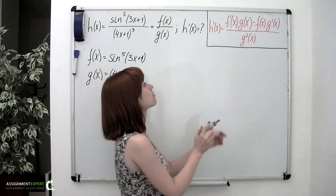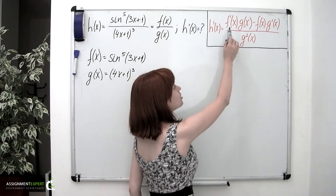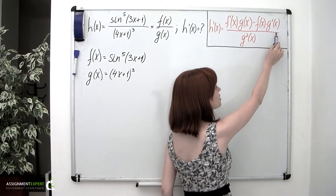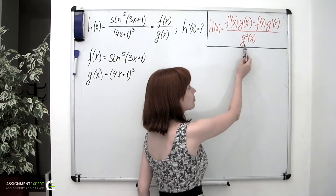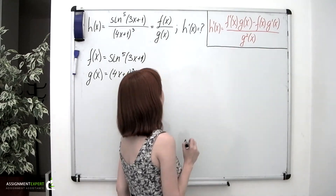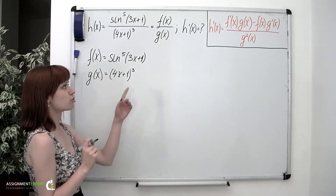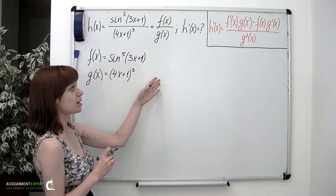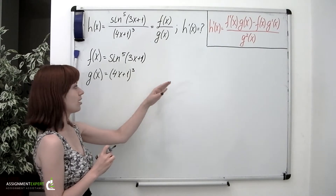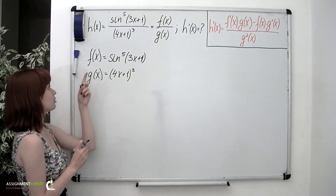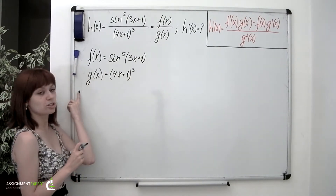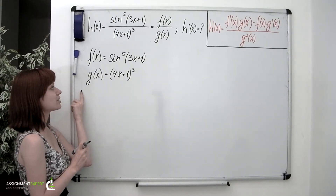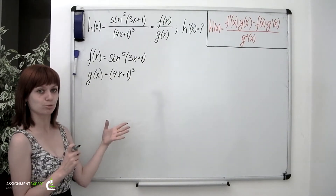The quotient rule gives us: H prime of x equals f prime of x times g of x, minus f of x times g prime of x, divided by g squared of x. That formula involves two derivatives, f prime of x and g prime of x. And obviously, both f and g are composite functions, so to find their derivatives we're going to need to use the chain rule.